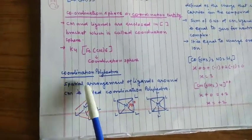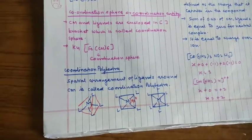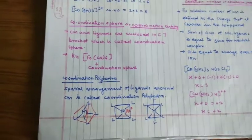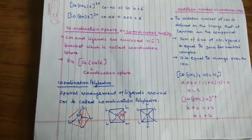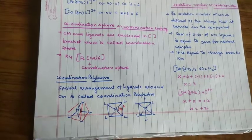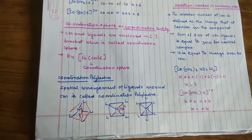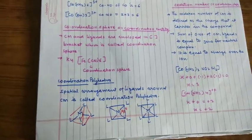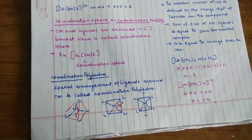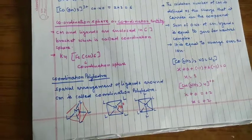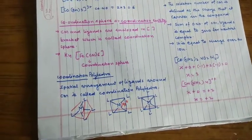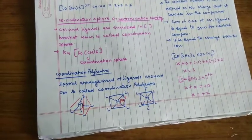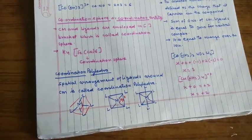अब चलो अब coordination polyhedra। ये जो ligand होते हैं around central metal atom in coordination sphere, actually ये repel करते हैं एक-दूसरे को। Repulsion को minimize करने के लिए they arrange in some preferred geometric fashion। एक preferred geometry में ये arrange हो जाते हैं and this gives particular shape to the coordination sphere। तो ये जो spatial arrangement of ligand है around CM, is called coordination polyhedra।